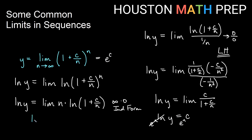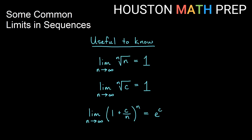As an example, the limit as n approaches infinity of 1 plus 5 over n to the n would be e to the 5. So to summarize: the limit of the nth root of n, or the nth root of a constant, is 1. And the limit of 1 plus c over n to the n is e to the c. Try to keep these at the front of your mind when working with limits of sequences and series. Thanks for watching everyone — we'll see you in the next video.